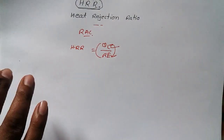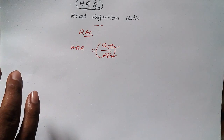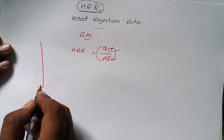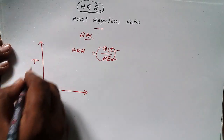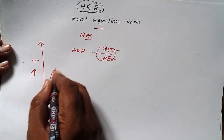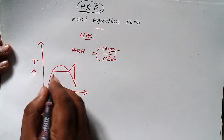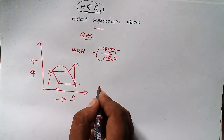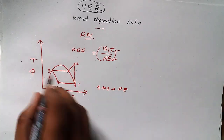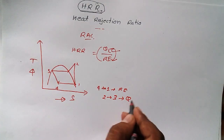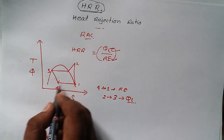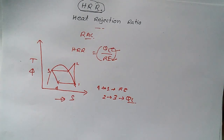To understand this concept properly, we need to know the TS diagram of the VCRS cycle — the Vapor Compression Refrigeration System. On the TS diagram (Temperature vs. Entropy), we have points one, two, three, and four. From four to one we have the refrigerant effect, and from two to three we have Qc, the heat rejected at the condenser.